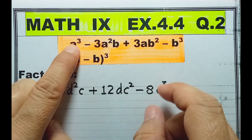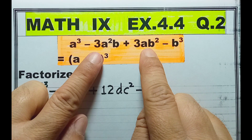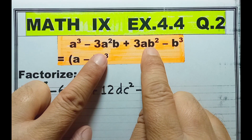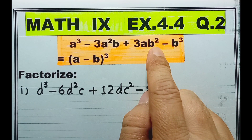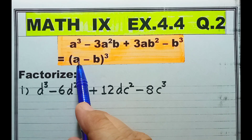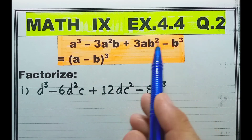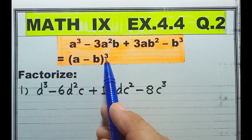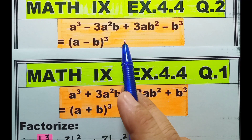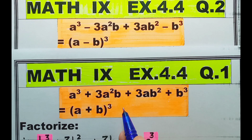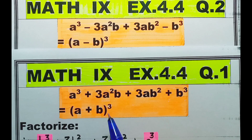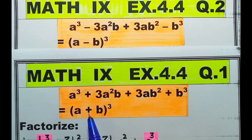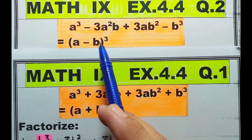Look, this is a cubed and this is b cubed. Aur darmiyan mein aa rahe hain 3ab, 3ab. Yahaan par a par square laga hua hai, jabke yahaan par b par square laga hua hai. Second step mein a aur b dono pick kiye gaye hain. Chunke dono par cubes lage hue hain, isliye whole cube laga diya gaya hai.